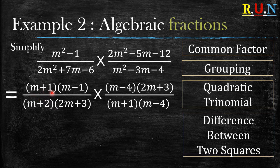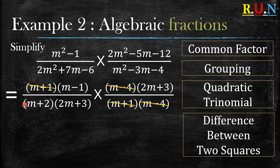Now let's start the cancellation. m plus 2 — is there another m plus 2 in the denominator? Yes, so we cancel out the one in the numerator and the one in the denominator. m minus 1 — is there another m minus 1 in the denominator? No, so we move on. m minus 4 — is there m minus 4 in the denominator? Yes, so we cancel those out. Then 2m plus 3 — is there 2m plus 3 in the denominator? Yes, so we cancel the 2m plus 3 in the numerator and the one in the denominator.